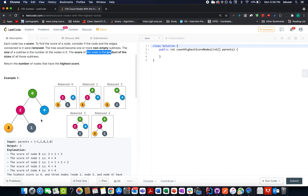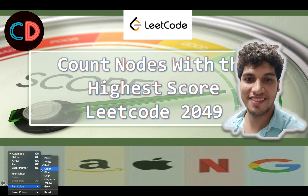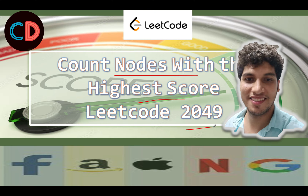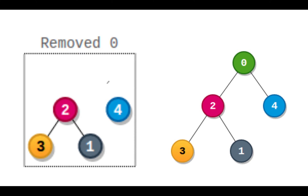Let's look at the presentation I have created. This is LeetCode 2049 — Count Nodes with the Highest Score — a medium-level question, and I agree with that rating. The question says: identify nodes with maximum score. You delete a node and identify the number of subtrees formed; the score equals the product of those subtree sizes. Removing node zero gives two subtrees of size three and one, so three into one is three — the score of zero is three.